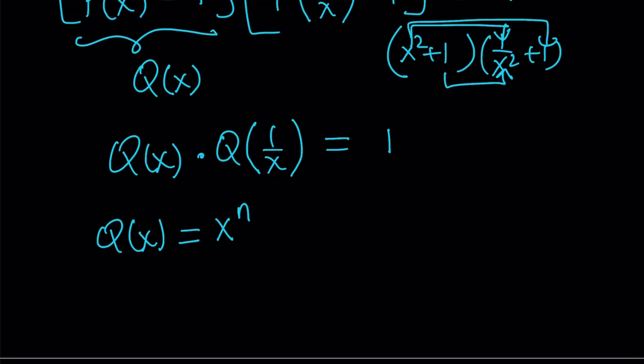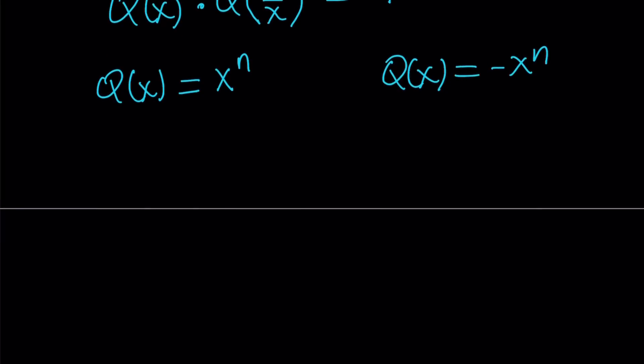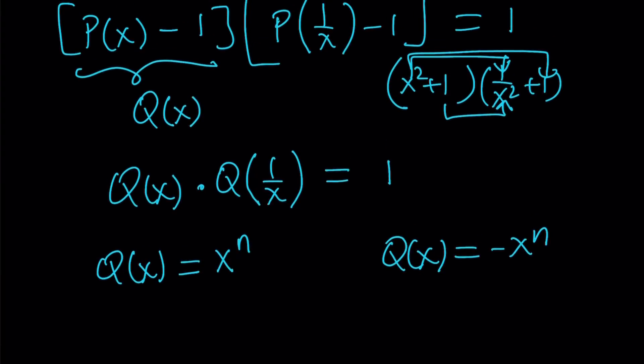Of course, it could also be negative X to the power N, but let's just say plus minus, or we can write it as negative X to the power N as well. Because when you replace X with 1 over X, you're going to get negative 1 over X to the power N, and they're going to cancel out and give you 1 again. All right, great. So let's see how this works out.